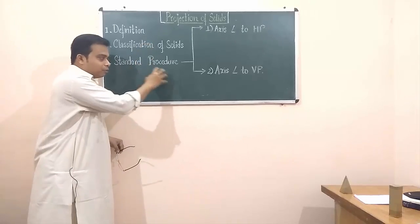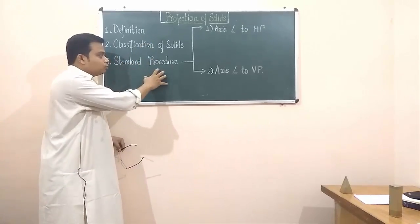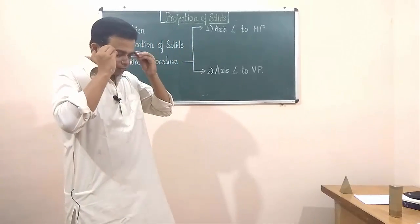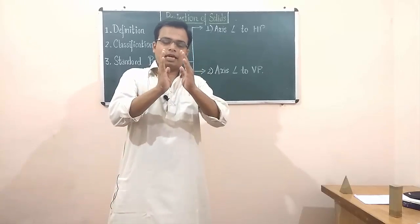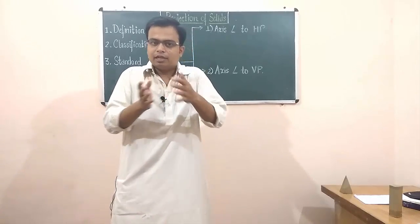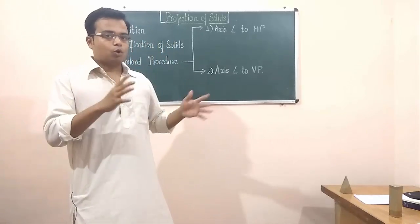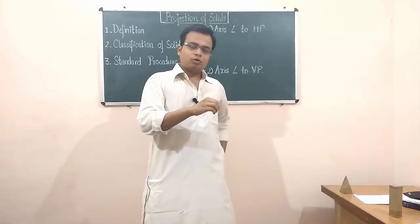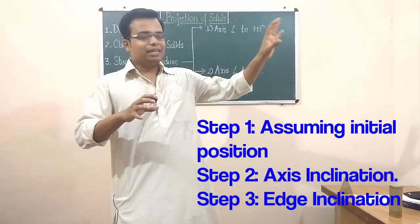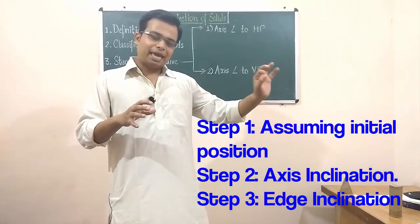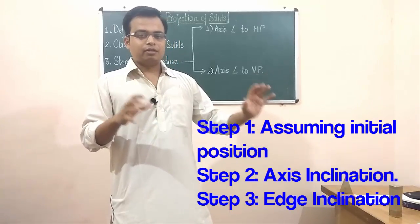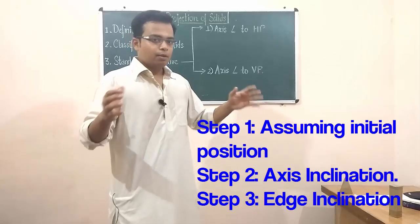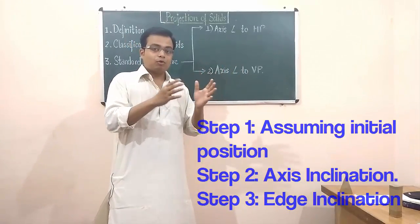Now that we've covered the types of solids, let's look at the standard procedure for working out the projection of solids — creating front and top views. There are three steps, just like in projection of planes: Step 1 is assuming the initial position, Step 2 is axis inclination, and Step 3 is edge inclination. The most important step is Step 1.